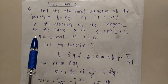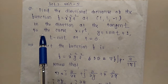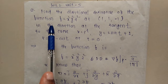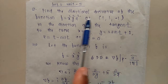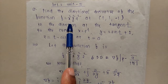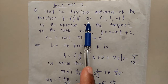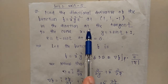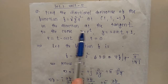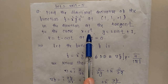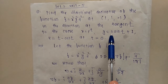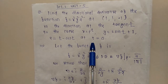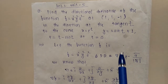Good morning friends. This is the third example on the directional derivative. The question is: find the directional derivative of the function f = x²y²z² at point (1, 1, -1) in the direction of the tangent to the curve x = eᵗ, y = 2sin(t) + 1, z = t - cos(t) at t = 0.